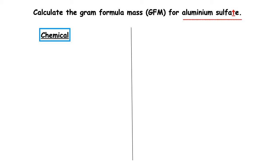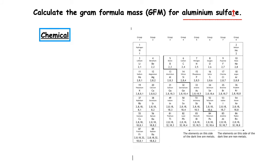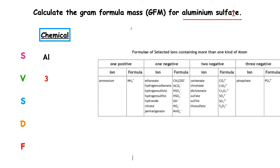For this example, we want to calculate the gram formula mass for aluminium sulfate. It ends in '-ate', so we're going to have to use page 8 of our data booklet. We start off with our SVSDF. The symbol for aluminium is Al — it's found in group 3, valency 3. Sulfate: we use page 8, and the chemical symbols are SO₄. We need to keep a bracket around that.